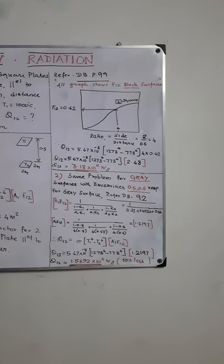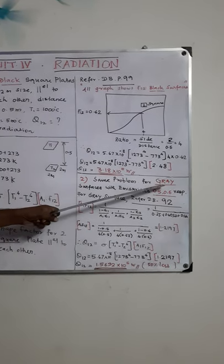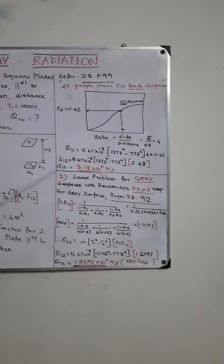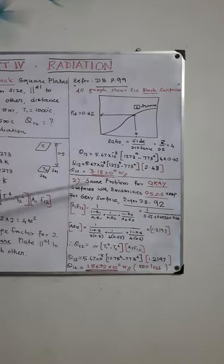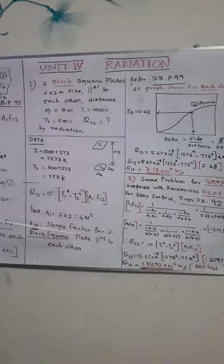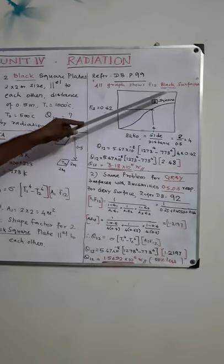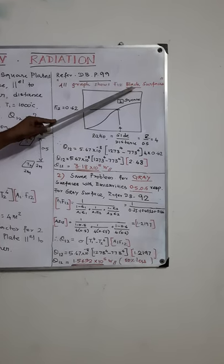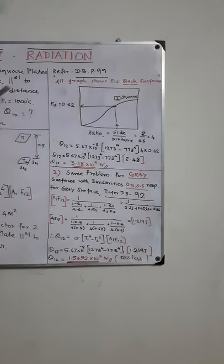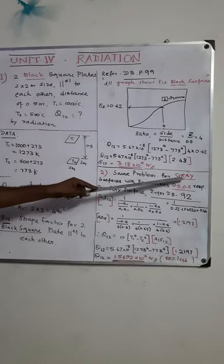Now I would like to explain the same problem for a gray surface. What is a gray surface? Its emissivity is less than 1. So you may be 0.9 or 0.1, whatever it may be. Assume that, and I would like to explain the same problem for a gray surface. The previous one is, we know that it is a black surface, so the graph represents only the black surface shape factor. So we can just follow the same procedure. But if it is a gray surface, assume that, if it is a gray surface with the emissivity value of 0.5 and 0.6.